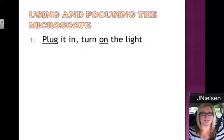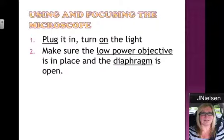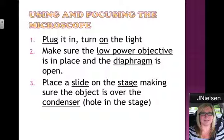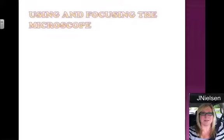When we take the microscope out, we want to plug it in and turn on the light — there's a little on-off switch. Make sure that the low power objective is in place, that's the smallest one, and that the diaphragm is open. You'll know if the diaphragm is open or closed because you'll see how much light is coming through the stage. Place a slide on the stage, making sure that the object is over the condenser — that's the hole — so that the light can pass through it. Then use the stage clips to hold the slide in place.